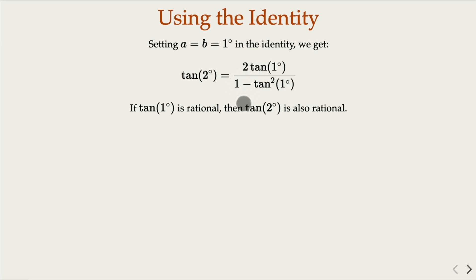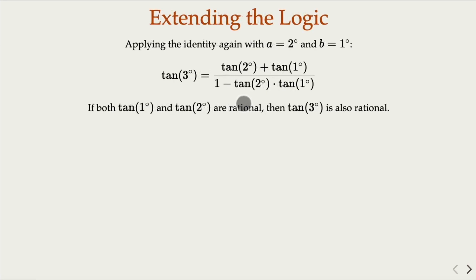And of course, if you apply a equals two degrees and b equals one degree here, you're going to say tangent of three degrees is going to be this ratio here. And again, they are all rational, and so on and so forth.